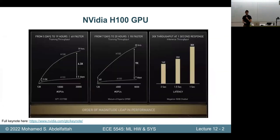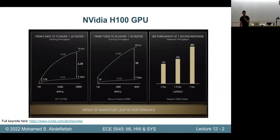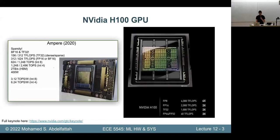What's the catch — how do you get 7x performance? This chip is now 700 watts, whereas the previous one was 400 watts. So approximately 2x of those 7x or 9x improvements come from just putting more power into the chip.